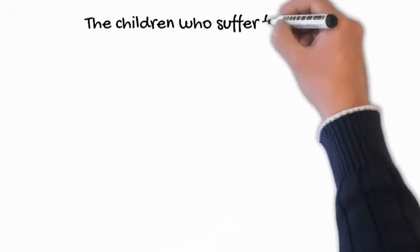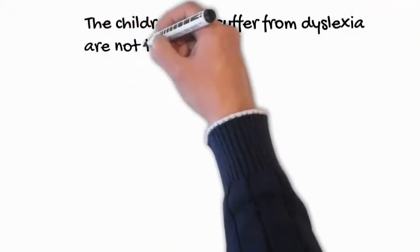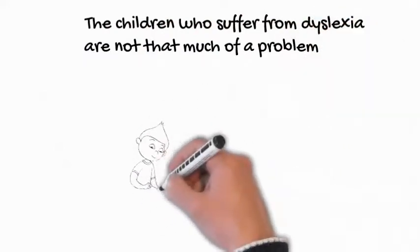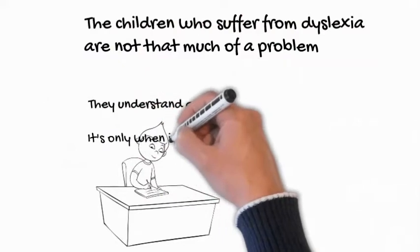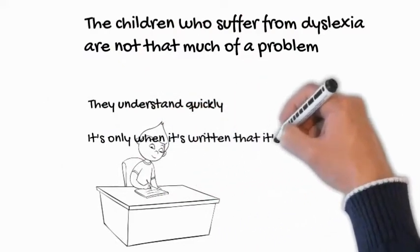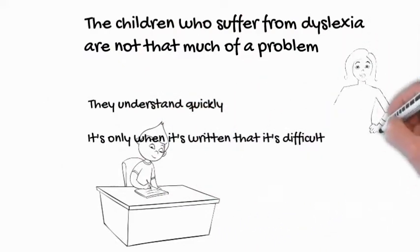Usually pupils who suffer from dyslexia are not that much of a problem. They understand quickly, they can talk, usually they've got a good accent, and it's only when it's written that it's difficult. But they understand, it's not too much of a problem.